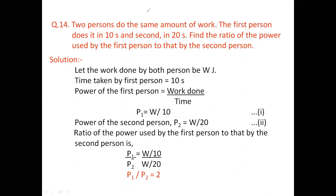Question number 14: Two persons do the same amount of work. The first person does it in 10 seconds, second person in 20 seconds. There are two people and they are doing the same amount of work. Then we have to find the ratio of power used by the first person to that of the second person.